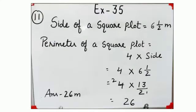Next question. Look at question 11. Find the perimeter of a square plot of land whose each side is 6 and 1 by 2 meters. You have to find perimeter of square, and the side 6 and 1 by 2 meters is given. The formula for perimeter of square plot is 4 multiply side.